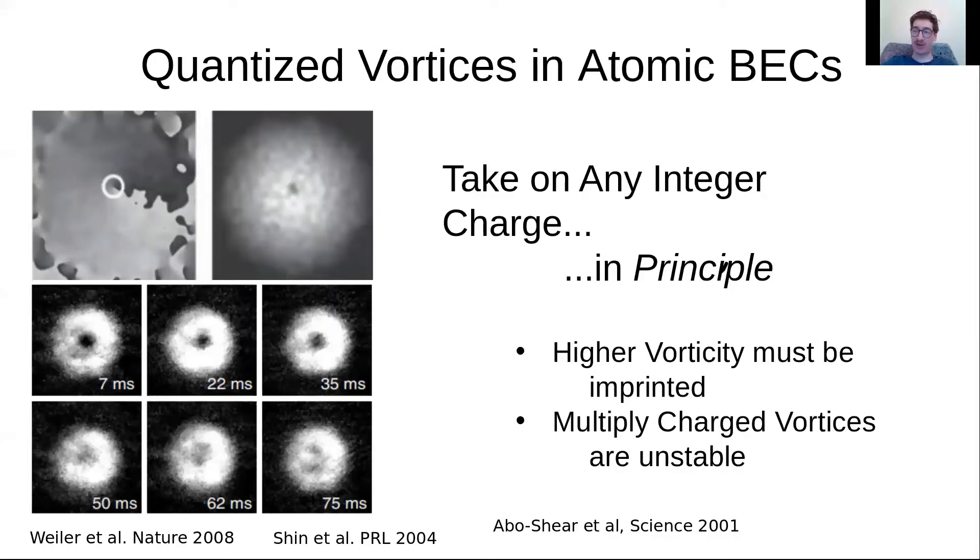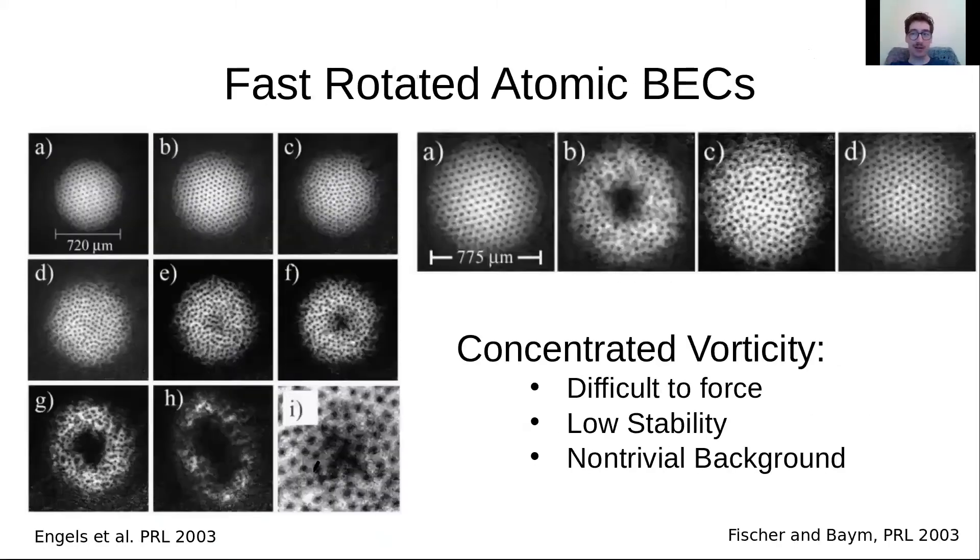We can see in this experiment on the left a doubly charged vortex has been imprinted on an atomic Bose-Einstein condensate with a Gaussian laser beam, and it quickly breaks apart into a pair of unit vortices which are more stable.